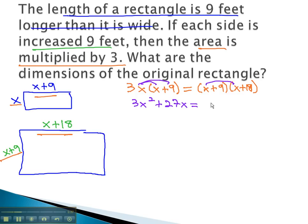Foiling out the right side, we get x squared plus 18x plus 9x plus 9 times 18, which is 162.